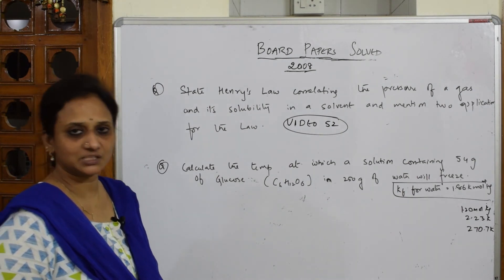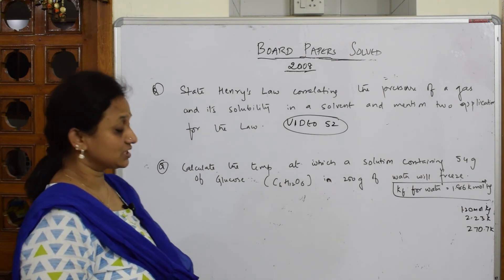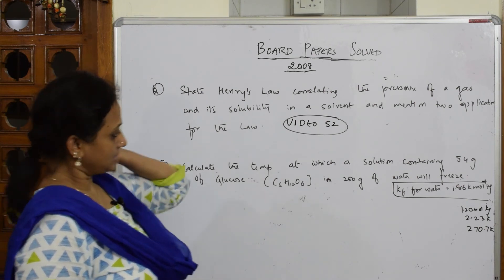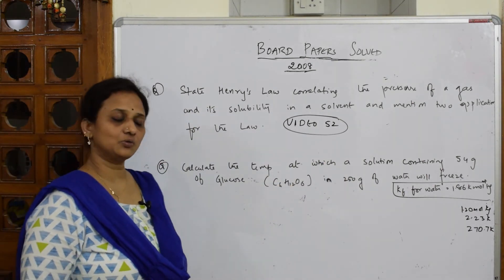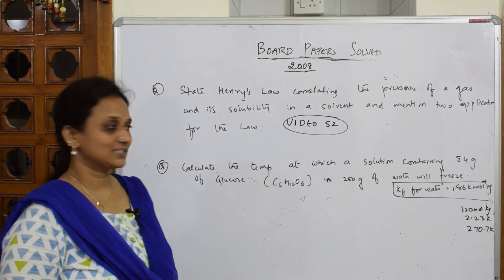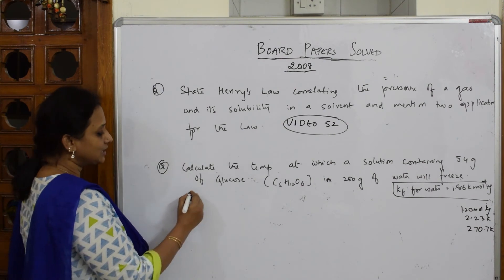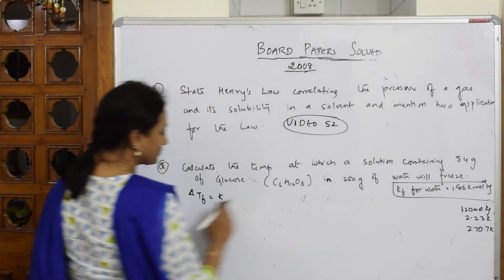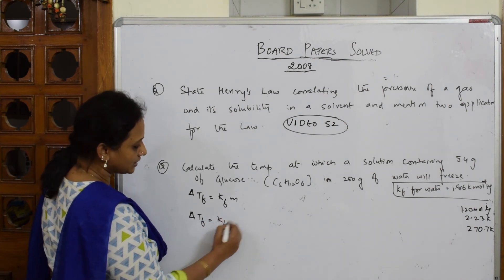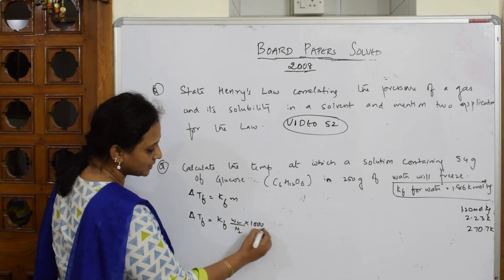Here we have one more numerical. Calculate the temperature at which a solution containing 54 grams of glucose dissolved in 250 grams of water will freeze. So W₂ = 54 g and W₁ = 250 g are given. I have to calculate the freezing temperature. The formula is: ΔTf = Kf × W₂ / M₂ × 1000 / W₁.